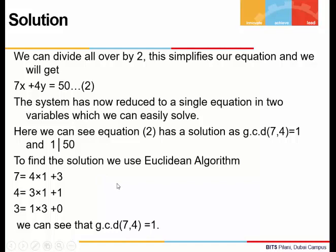We will use the Euclidean algorithm to find the solution of equation 2. 7 is the larger integer, so we divide 7 by 4 and use Euclid's division lemma and write it as 7 is 4 into 1 plus 3. In the next step we will divide 4 by 3, and that will give us 4 is equal to 3 into 1 plus 1. Lastly, we divide 3 by 1 and we get 3 is equal to 1 into 3 plus 0. We will stop because the remainder is 0. We can see that 1 is the GCD of 7 and 4.